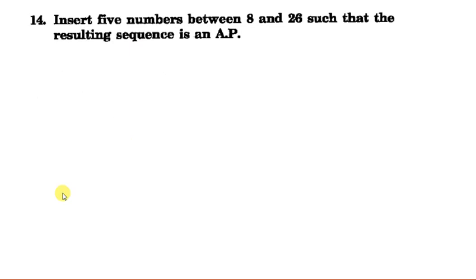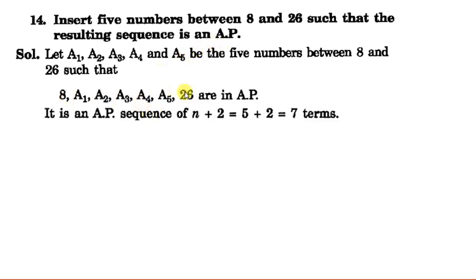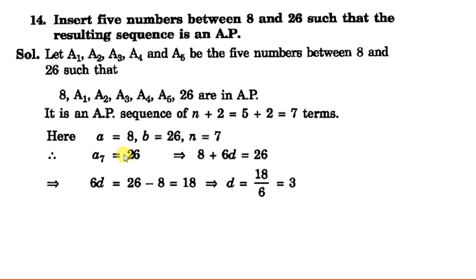Now let us do questions based on this. Question 14 of Exercise 9.2: Insert 5 numbers between 8 and 26 such that the resulting sequence is an AP. Since we are inserting 5 numbers, the total number of terms in the sequence will be 7, so 26 is the 7th term. Using the formula: a7 equals 26, meaning 8 plus 6d equals 26, so d equals (26 minus 8) divided by 6, which is 3.